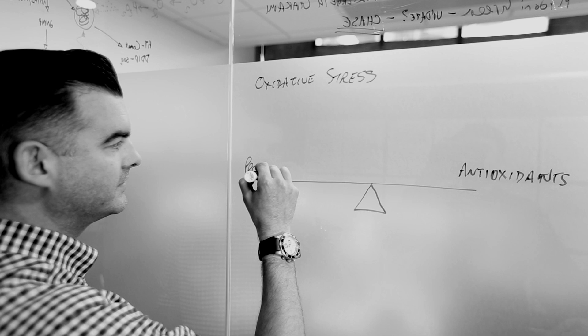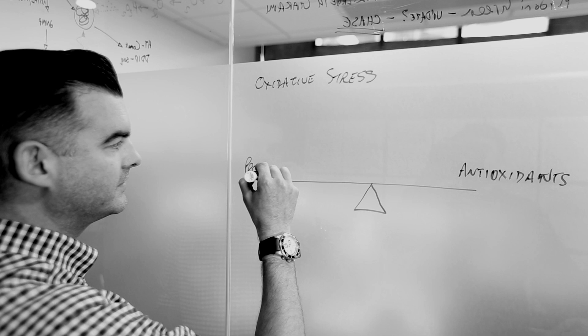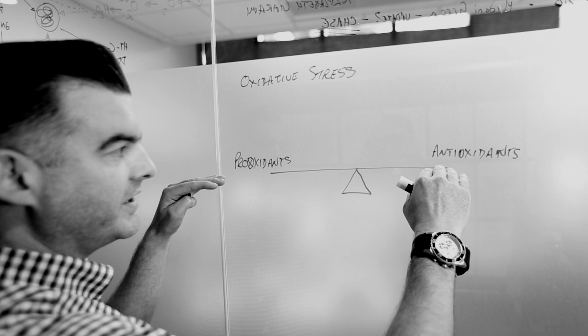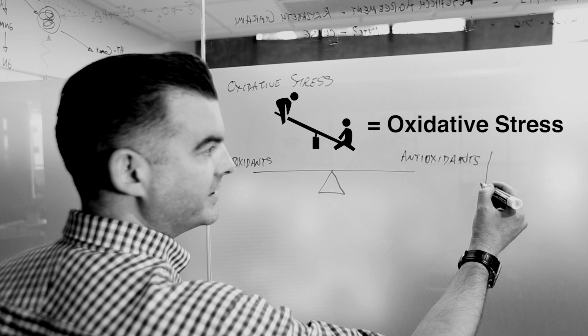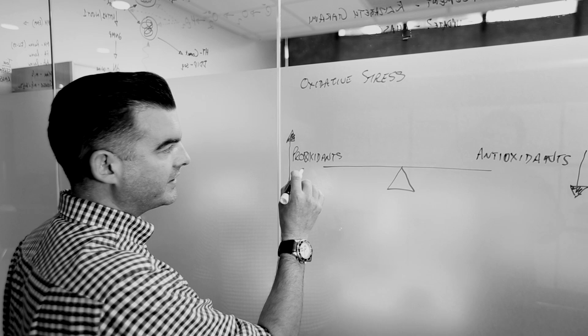We have antioxidants on one side and pro-oxidants on the other. Normally there's a balance between these two. Oxidative stress occurs when you get an imbalance - a decrease in antioxidants and an increase in pro-oxidants. Pro-oxidants include